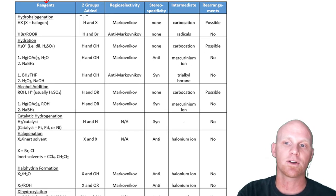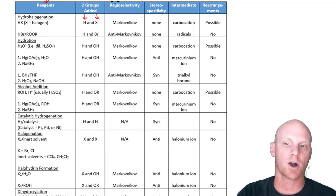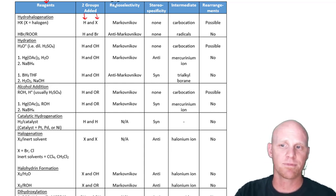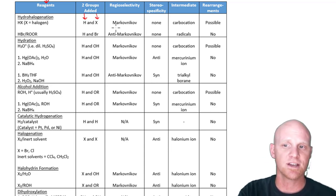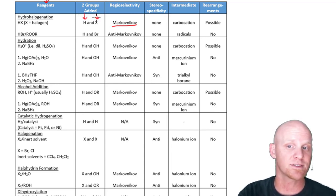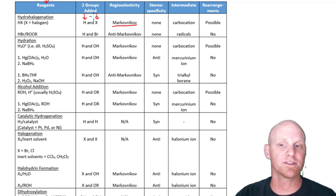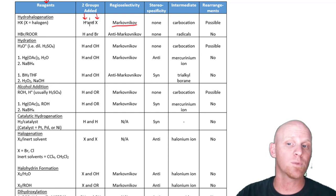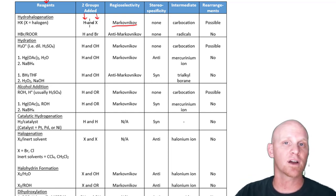So if you see HBr, that adds H and a Br. I've set this up throughout the regioselectivity. When it's Markovnikov addition, the H, which is on the left, adds to the less-substituted side, and the bromine, which would be the X here, adds to the more-substituted side. That's Markovnikov addition. So the one on the left on the less-substituted, the one on the right on the more-substituted, and if it goes anti-Markovnikov, that would be exactly reversed.